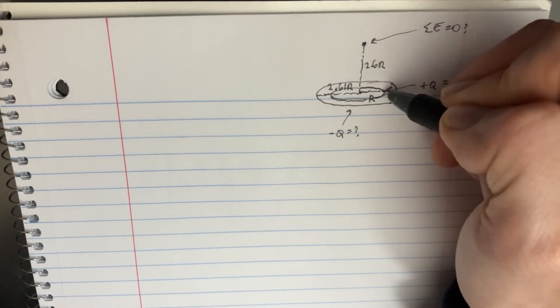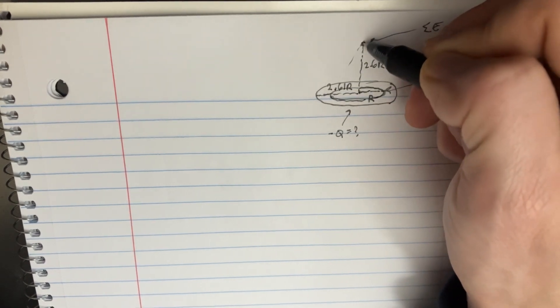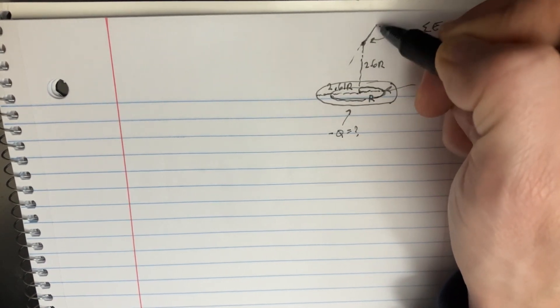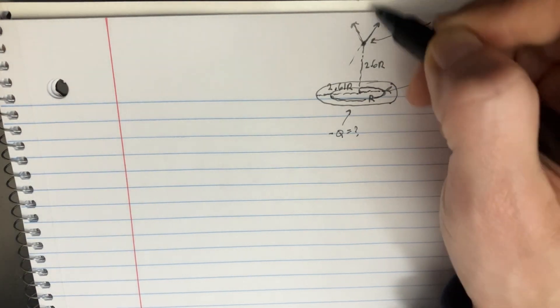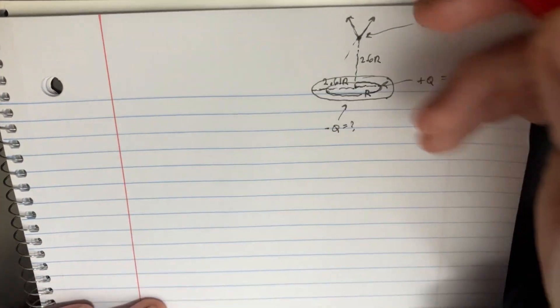So if this was positive, then we know that the arrows pointing towards this thing would be in this direction, coming from all points. And so we can see how everything would just kind of cancel out, and we just get this positive charge in this direction, right?